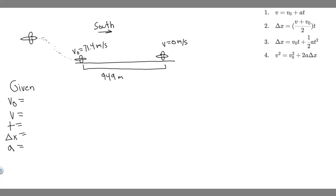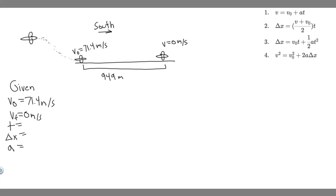We want to write down whether or not we're given each variable. For v sub zero — the initial velocity — we pick the interval starting at landing and ending when the jet stops. The initial velocity when it lands is 71.4 meters per second. The final velocity v is the velocity at the end of the interval. Since the jet comes to rest, the final velocity is 0 meters per second.